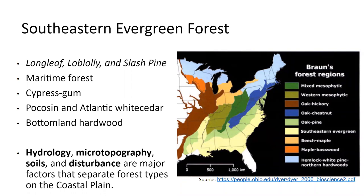Importantly, hydrology, micro-topography, soils, and disturbance are the major driving factors between forest and plant community types on the coastal plain. In coastal plain forests, these are the factors that separate these forests and make them recognizable communities.